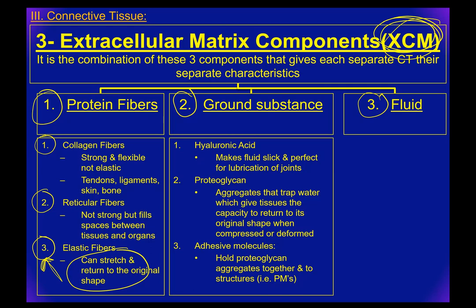Now, the ground substance. You've got hyaluronic acid, which is kind of an oily, slick fluid — it makes things slick and is great for lubrication. Think about your joints: anytime you're moving them, you're rubbing cartilage on cartilage. If that joint isn't lubricated, it would be like taking dry rubber and rubbing it on dry rubber — you'd eventually wear it away.